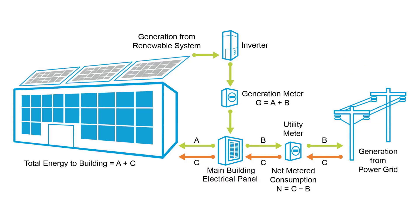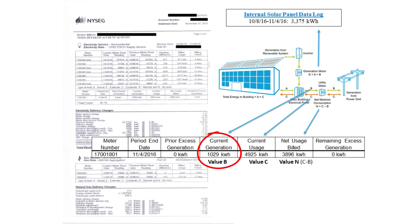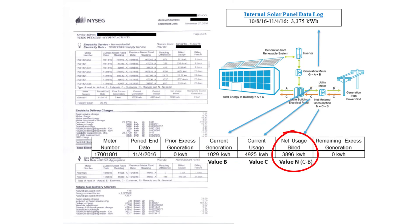Let's take a look at how these values might appear on a utility bill. In this example, the utility bill provides all of the energy flows that we need to benchmark correctly in Portfolio Manager. This bill shows current usage, which equates to Flow C, or total grid electricity consumption. It indicates the amount of energy that was generated on-site and exported back to the grid, Flow B, which the utility refers to as current generation. And it also shows net usage billed, which equates to the net metered consumption value, or C minus B.